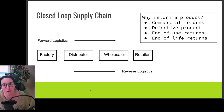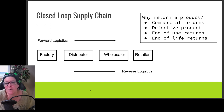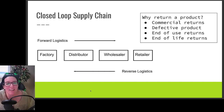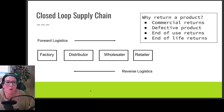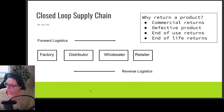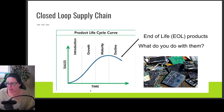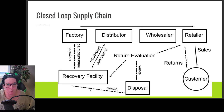We also have end of life returns — the product was not defective when we bought it. Maybe I used it for a good 10 years, like a TV I've had for a number of years, and now I'm done with it. I don't want to throw it directly into the landfill. Can I return it and can it go back up through the supply chain? Maybe pieces of it can be pulled apart and used to make new products. So if we're managing both the forward logistics and reverse logistics, we have what is called a closed loop supply chain.